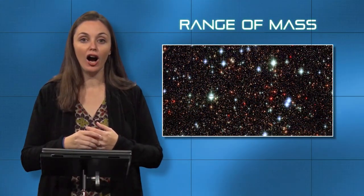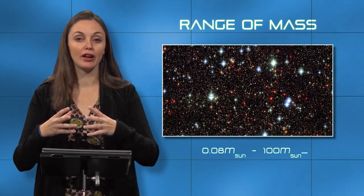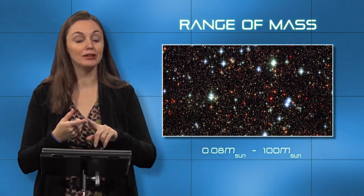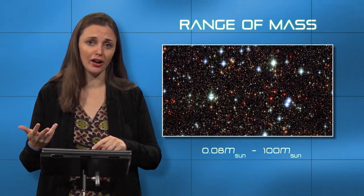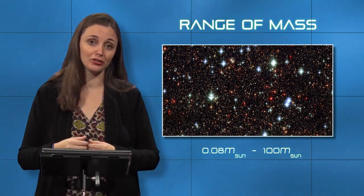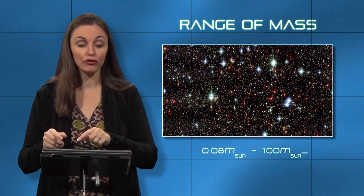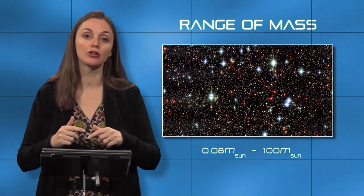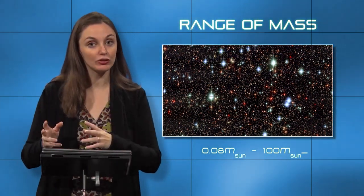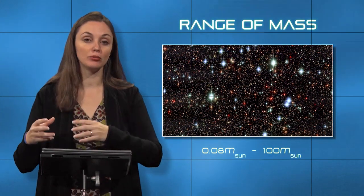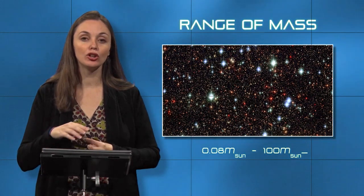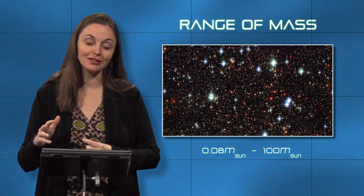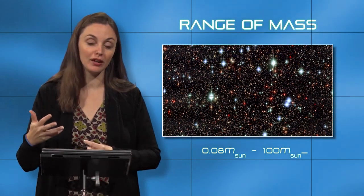What it boils down to is that there are stars with a fraction of the mass of our Sun — making them dimmer and cooler — and stars up to about 100 times the mass of our Sun. That range in mass influences all other properties: the range in luminosity, the range in temperature, and spectral type are all aspects of that range in mass. Next time we'll see that this range in mass also allows for huge differences in how fusion takes place and in the overall lifespan of these stars.